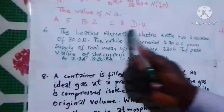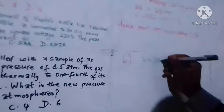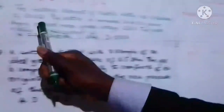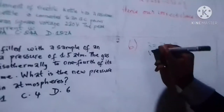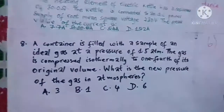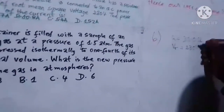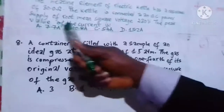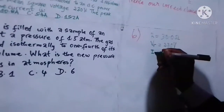Question number six says: the heating element of an electric kettle has a resistance of 30.0 ohms — let's take down that information. The resistance is 30.0 ohms. The kettle is connected to an AC power supply of root mean square voltage 230 volts. The peak value of the current — also called the maximum value of the current — let's designate it i-max.